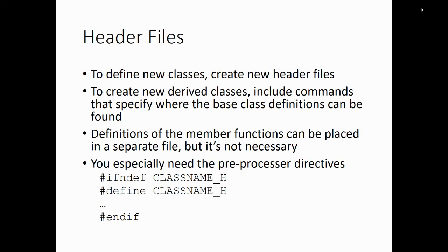For header files of derived classes, you'll need some preprocessor directives. You'll need to include those base classes, but you don't want to compile them multiple times. To create the new derived class, include commands that specify where the base class definitions can be found. Use preprocessor directives — if not defined CLASS_NAME_H, then define CLASS_NAME_H — so you're not defining things multiple times, because some compilers can get themselves in a loop.